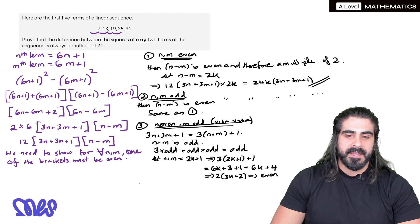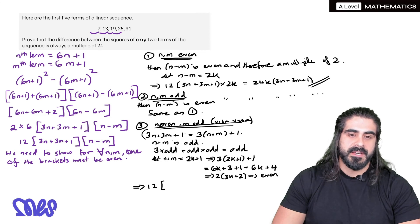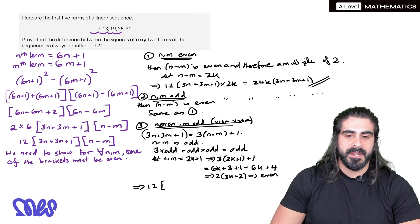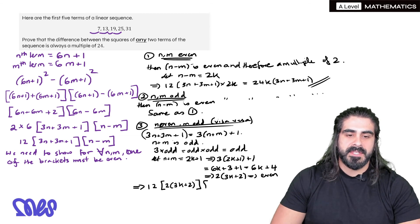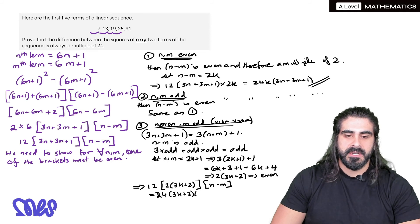And we would have 3 lots of 2k plus 1, plus 1. When we expand that, we get 6k plus 3, plus 1, which is 6k plus 4. And we can then factorize out a 2. 2 lots of 3k plus 2, which is even. When we sub that back in, we get 12 lots of, so remember the bracket was 3n plus 3m plus 1. We can replace that with what we had before, 2 lots of 3k plus 2, times that n minus m, which leaves us with 24 lots of 3k plus 2 times n minus m, which is proved.